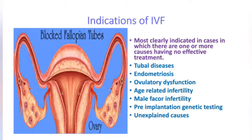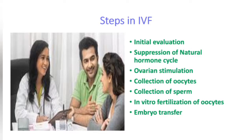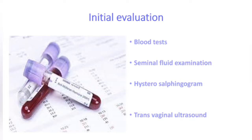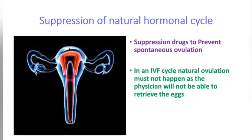The steps in in vitro fertilization include: initial evaluation, suppression of the natural hormone cycle, ovulation stimulation, collection of the oocytes, collection of sperm, in vitro fertilization of the oocytes, and embryo transfer. The initial evaluations include blood tests, seminal fluid examinations, hysterosalpingogram, and transvaginal ultrasonography.